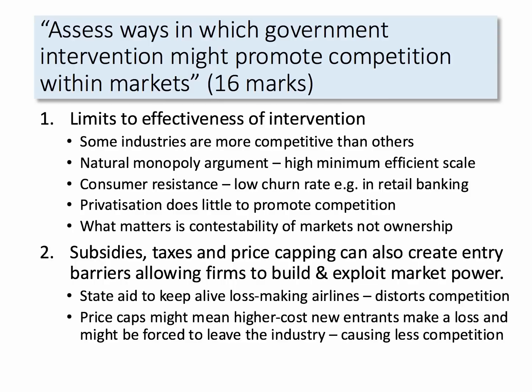A second evaluation thread is that things like subsidies and taxes as interventions might actually — counter-intuitively — make the level of competition less intense. For example, state aid to certain businesses reduces competition because it keeps inefficient businesses such as airlines going when perhaps they might be better off being allowed to fail for others to take their place. A price cap in a market — for example in payday loans or mobile phone tariffs — in theory addresses the monopoly profit element, but that could actually make it harder for new higher-cost entrants to come into the market. So a price cap could paradoxically reduce competition.